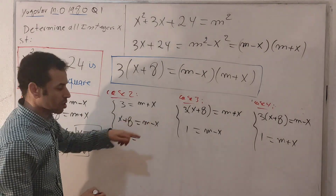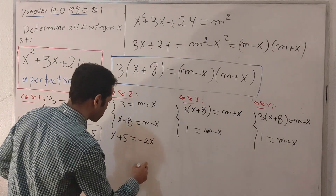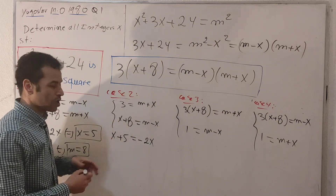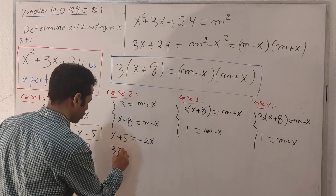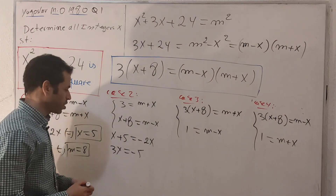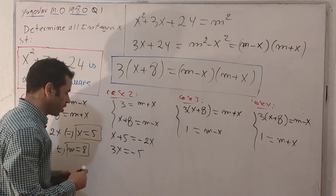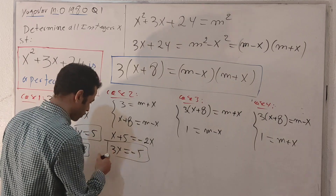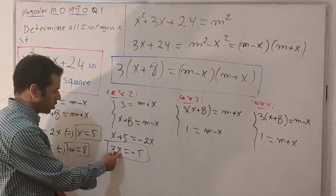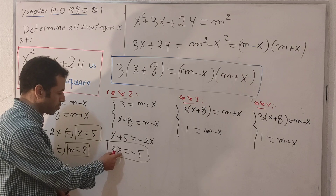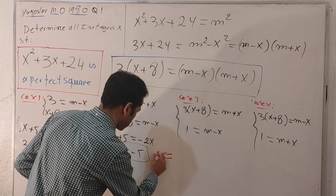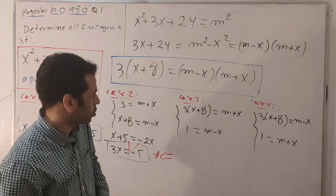Taking minus 2x to the left side: we get 3x equals minus 5, which is impossible because x must be an integer. So case two gives no solution — impossible.